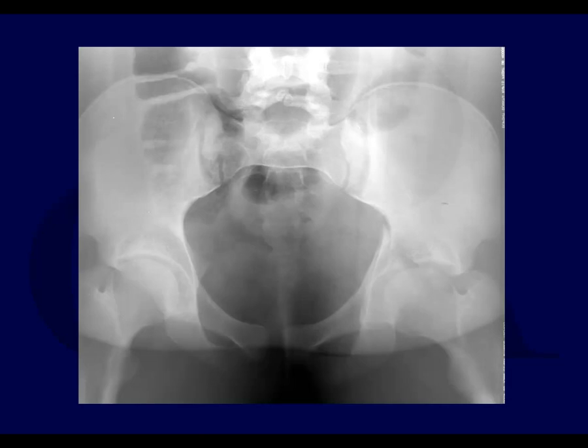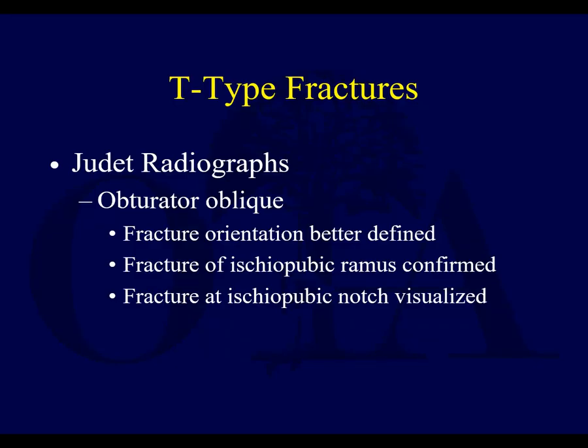On the AP radiograph, all your landmarks are disrupted — there's a transverse component with both the iliopectineal and ilioischial lines disrupted. The head often travels medially, as with many acetabulum fractures. You can see a common theme: with many acetabulum fracture types, the head either goes posteriorly or medially.